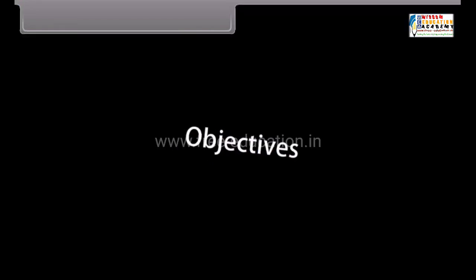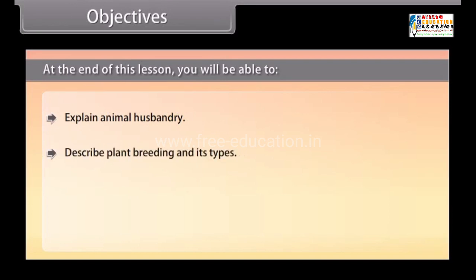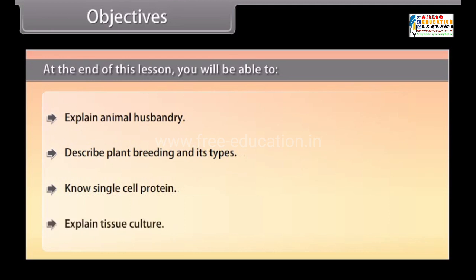Objectives: At the end of this lesson, you will be able to explain animal husbandry, describe plant breeding and its types, know single cell protein, and explain tissue culture.